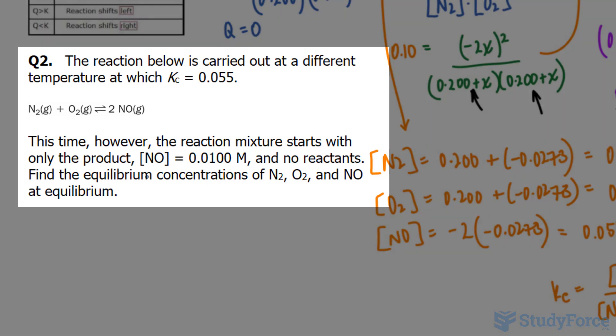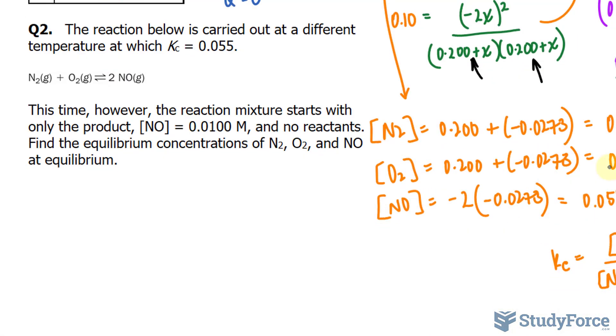Let's begin by creating an ice table, and an ice table consists of three rows, one for the initial concentration, then the change, and the equilibrium. So I'll rewrite it as N2 plus O2, and this yields two molecules of NO. I'll write in I, C, and E.